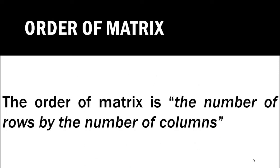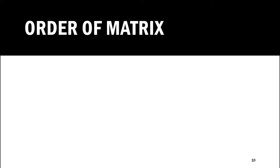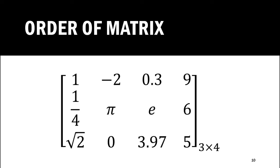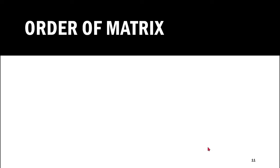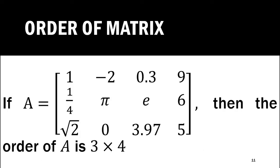The order of a matrix is the number of rows by the number of columns. As we have seen, the matrix having three rows and four columns — its order will be denoted by 3 by 4, that is number of rows by number of columns. If A is equal to the matrix given as before, then the order of A is 3 by 4.